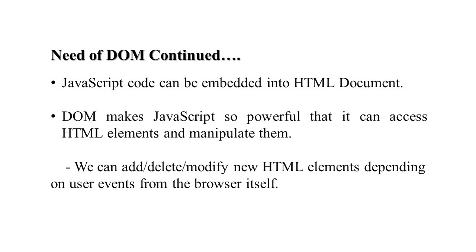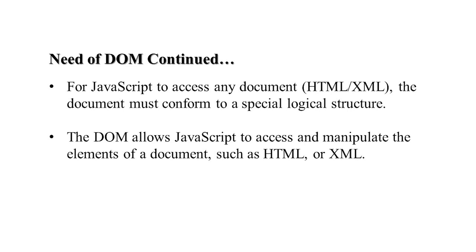JavaScript code can be embedded in an HTML document. The Document Object Model makes JavaScript very powerful — we can access HTML elements and tags and manipulate them: add, delete, or modify HTML elements depending on user events from the browser. The DOM allows JavaScript to access and manipulate elements of a document such as HTML or XML.